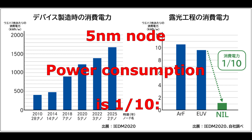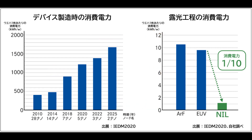For cutting-edge logic exposure technology at the 5nm node with a 15nm line width, power consumption is one-tenth compared to conventional projection exposure equipment. This greatly contributes to CO2 reduction.